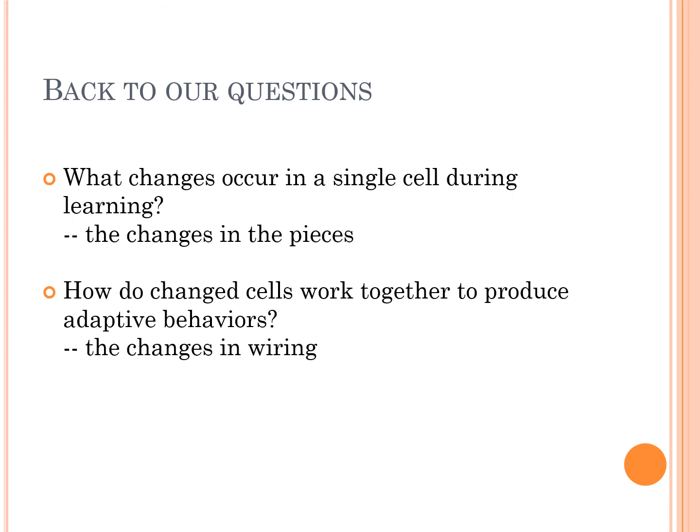Looking at the timing, I can only go to about 20 minutes, and the next piece — the modern search for the engram — is going to take enough time to go well past that. I want to come back to our two questions and confirm we haven't answered them yet. At the end we will: what are the changes occurring in single cells during learning, and what are the changes in the wiring of cells or how they behave together? We'll continue this on Wednesday, starting with the modern search for the engram and then discussing several types of memory.